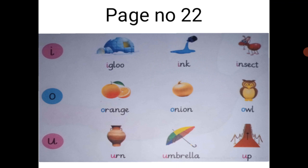Next is O: O, orange, O, onion, O, owl. Next is U: U, urn, U, umbrella, U, up. Here is a reading.